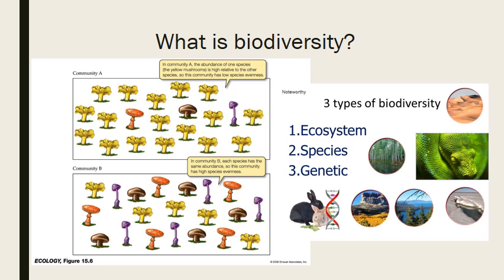Biodiversity is one of the measures of a healthy ecosystem. It is the measure of the number and kinds of organisms that are present in an ecosystem or habitat. The more biodiverse an ecosystem or habitat is, the more complex the food webs are and the healthier the ecosystem can be. Biodiversity is measured using several mathematical formulas, two key characteristics being species richness and species evenness. Species richness is the measure of how many different organism species are found in a particular ecosystem, while species evenness is the relative proportion of those organisms to each other.